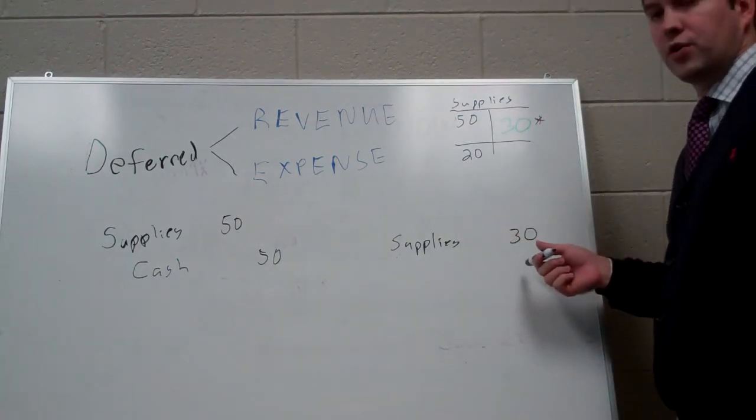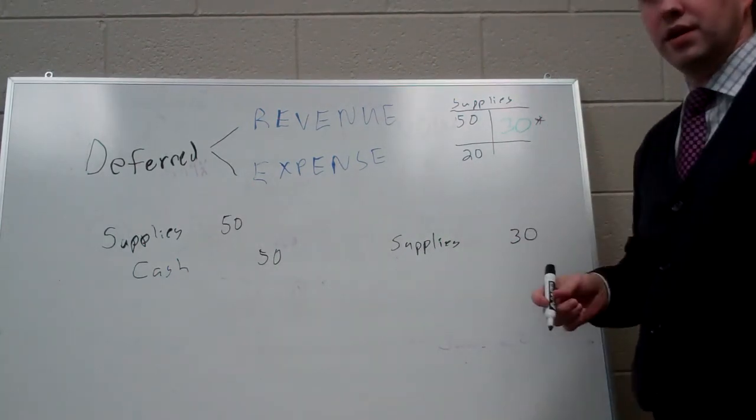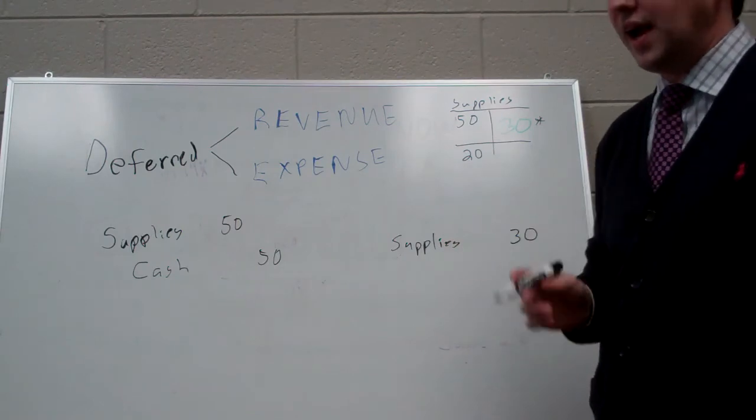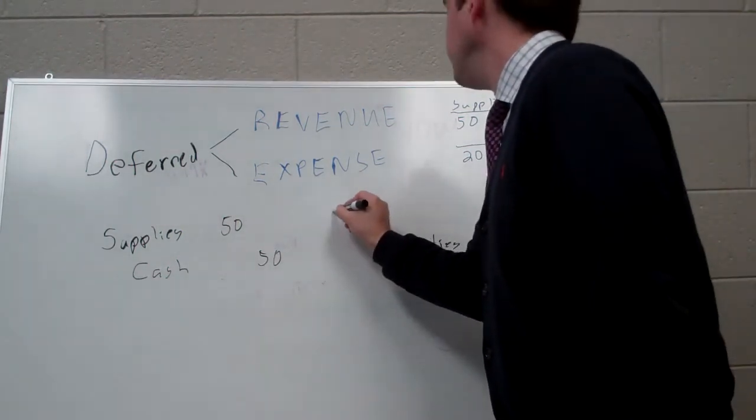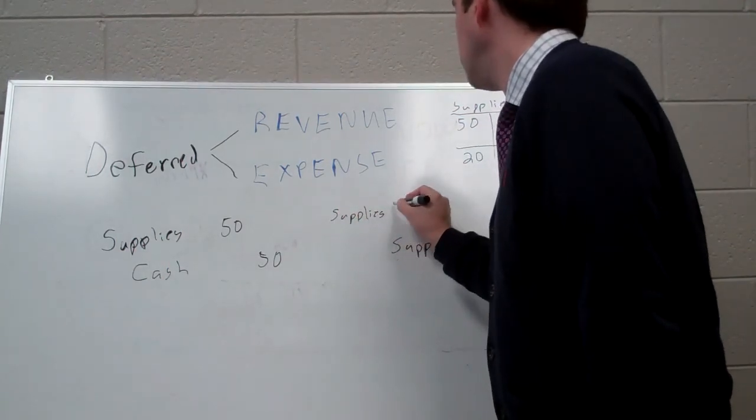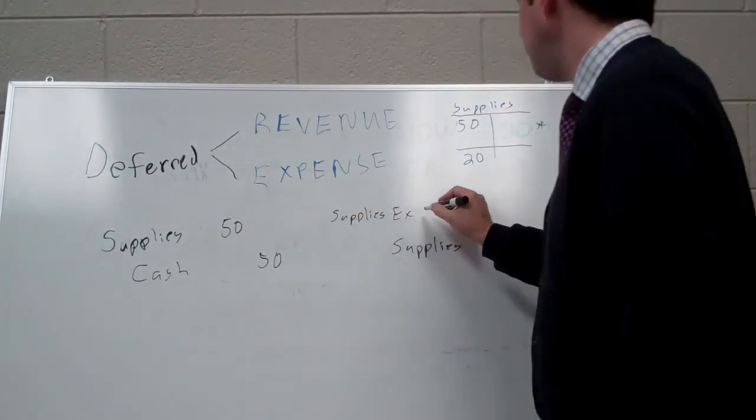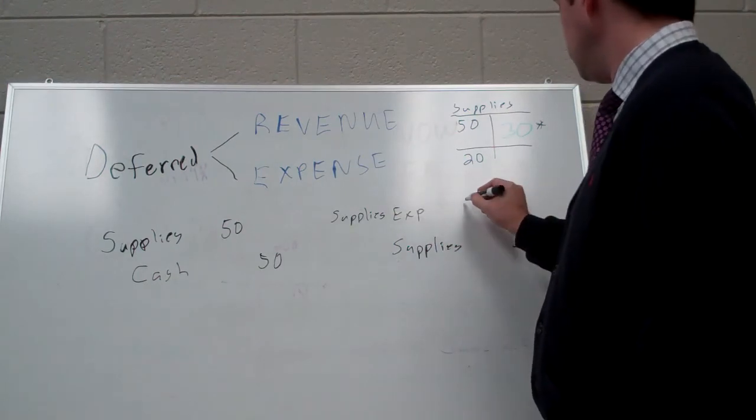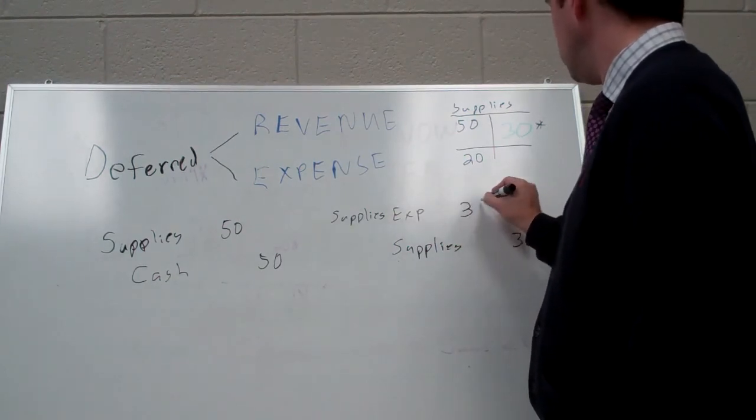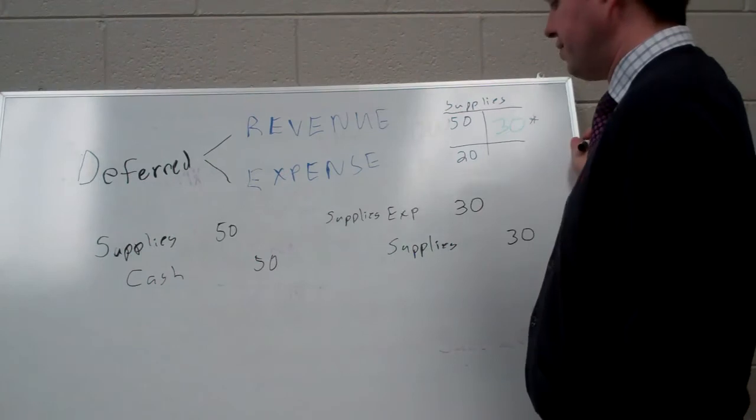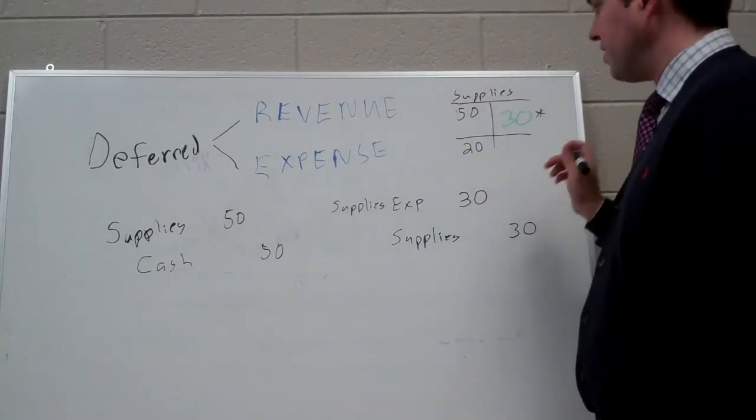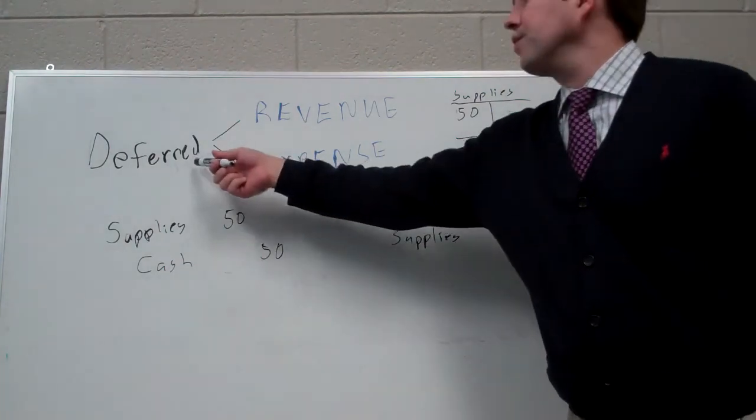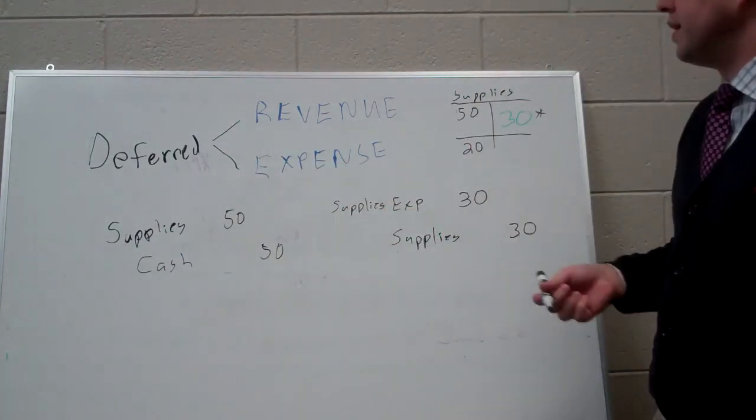We're going to do that by crediting supplies, just like we've done here, for $30. So there's our $30 credit, just like here. Supplies decrease on the credit side. And now, we need to record those supplies costs. We need to record the supplies expense for $30. And what we've done there is deferred recognition of the expense.